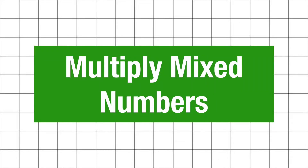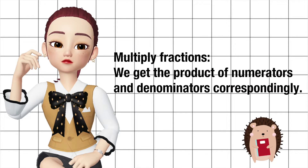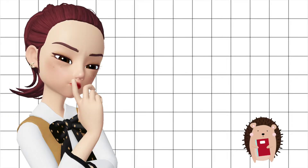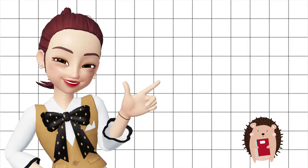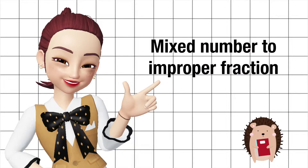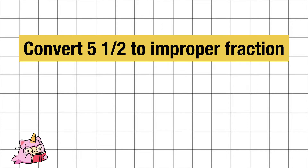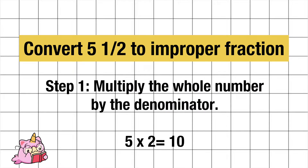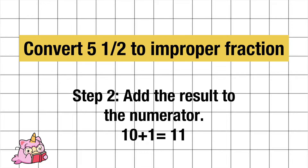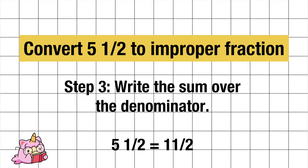Now, let's multiply mixed numbers. When we multiply fractions, we get the product of the numerators and denominators correspondingly. When the given numbers are mixed numbers, we need to first convert them to improper fractions. Step one: multiply the whole number by the denominator — five times two equals ten. Step two: add the result to the numerator — ten plus one equals eleven. Step three: write the sum over the denominator — eleven over two.